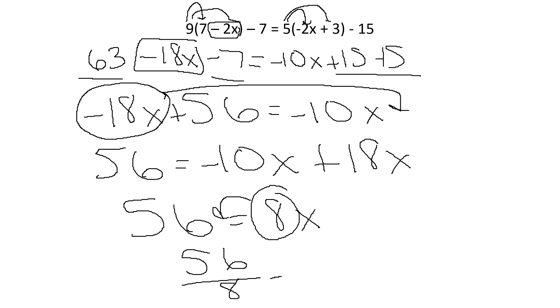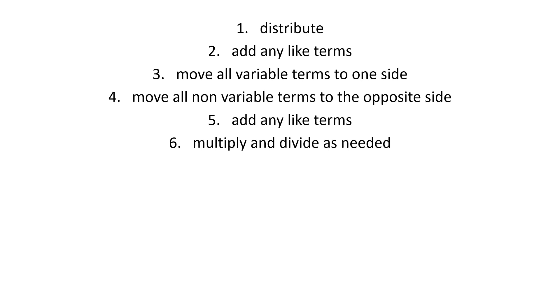And it becomes 56 divided by 8 equals x, which is 7. Okay, so it's easy to get bogged down and lost in these. Take it one step at a time, okay? Let me show you those steps. Steps 3, 4, 5, and 6. We may have talked about step 2 before. The new one is distributing. Step 1, always distribute. Just like order of operations, we do parentheses first. Distribute. Then add any like terms. Move all variable terms to one side. So anything with an x or any letter that's given, move to one side. Then move all non-variable terms to the opposite side. Then add any like terms. And then multiply and divide as needed. So if you're a note taker, I would write those down somewhere so you can reference back to those. Because this is going to be huge in math from here on out.